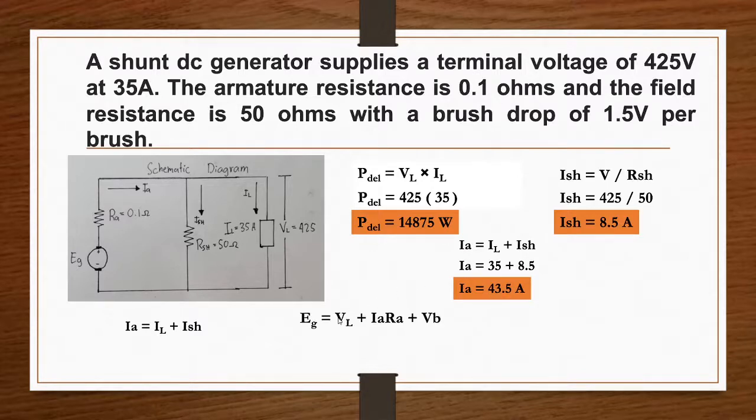Solving for generated voltage: E_g equals load voltage plus armature current times armature resistance. Since we have a brush drop, we add the voltage brush drop.